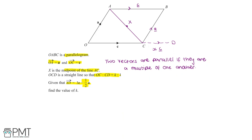We are given that the vector XD is equal to 3c minus half a, but there are other ways of finding vector XD using our diagram. To get from X to D, we can go from X to A, then A to B, then B to C, and then C to D.